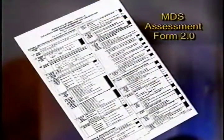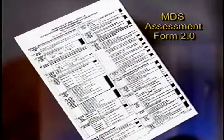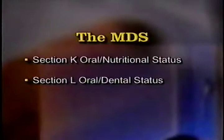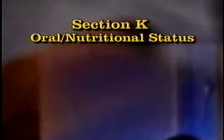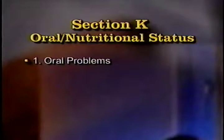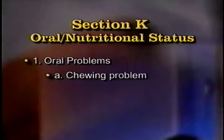When possible oral dental concerns are identified, the surveyor should review the resident's documented assessment on the resident's MDS at sections K and L, which are specific to the oral and dental assessment. I will be referring to the full MDS assessment form, version 2.0. Section K relates to oral nutritional status and section L relates to oral dental status. In section K, oral nutrition status, item number 1 asks the reviewer to consider if the resident has any documented oral problems: does the resident have a chewing problem, a swallowing problem, or evidence of mouth pain?